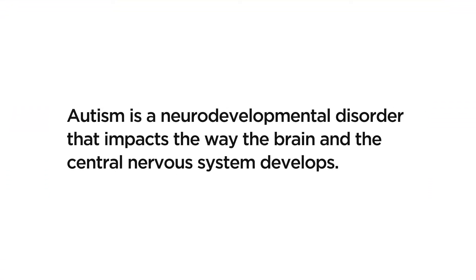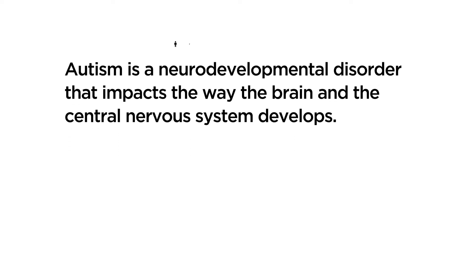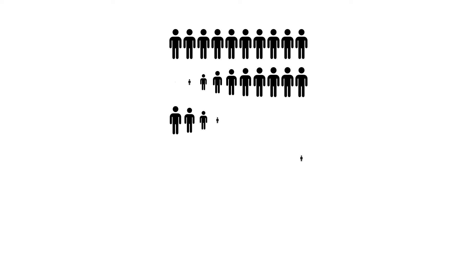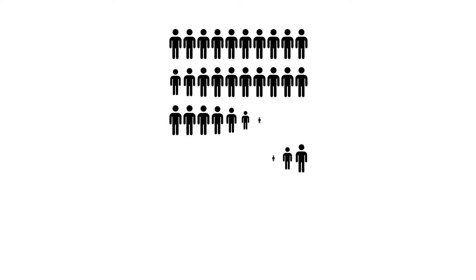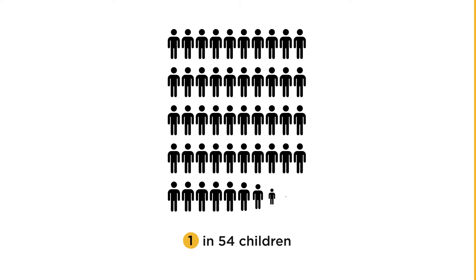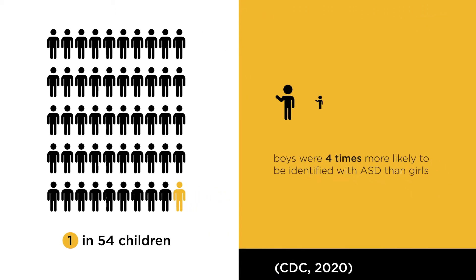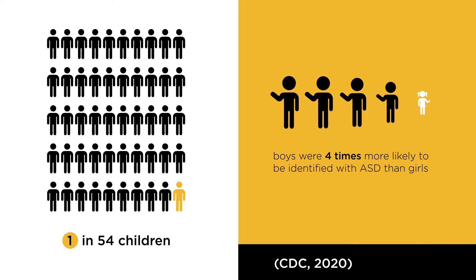According to the Center for Disease Control, autism is a neurodevelopmental disorder that impacts the way the brain and the central nervous system develops. In 2021, the Center for Disease Control estimates the prevalence of autism as 1 in 54 children, with autism being more common in males than in females.